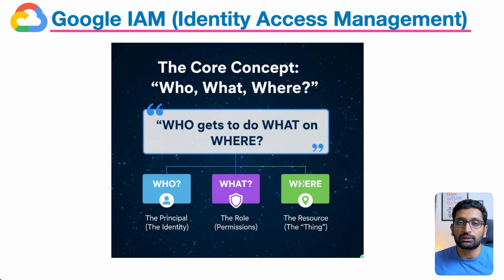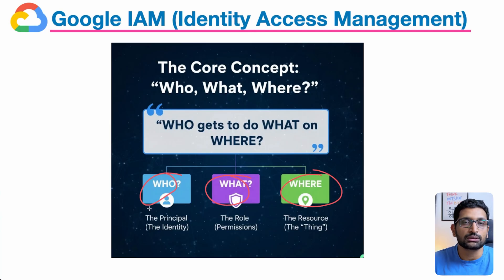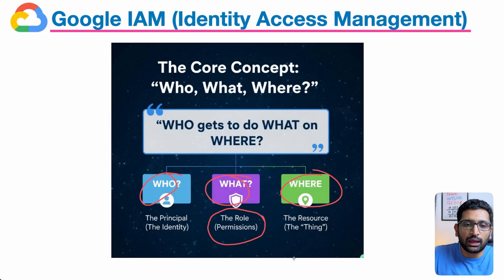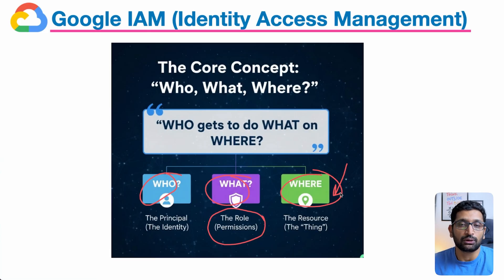IAM follows the principle of three W's: who, what, and where. 'Who' means the principal or user who is trying to access the Google Cloud account. 'What' means the roles and permissions associated with that particular user so that they can perform certain tasks. 'Where' refers to where they are going to perform those actions. These are the three key attributes to consider whenever you are creating IAM users and assigning roles.